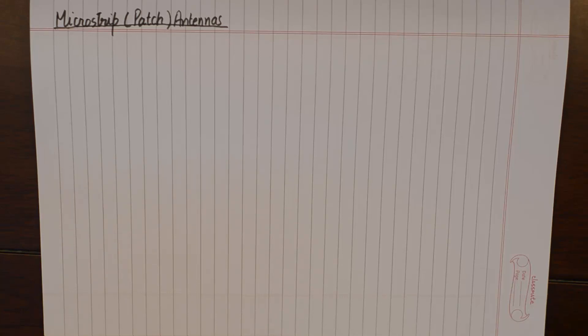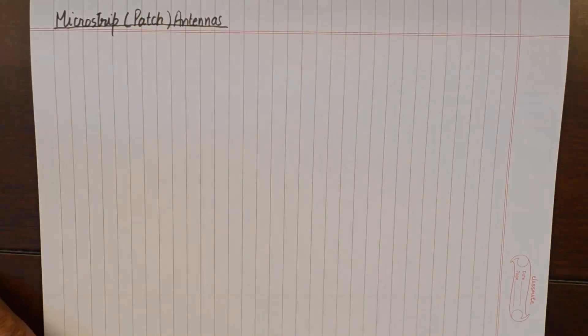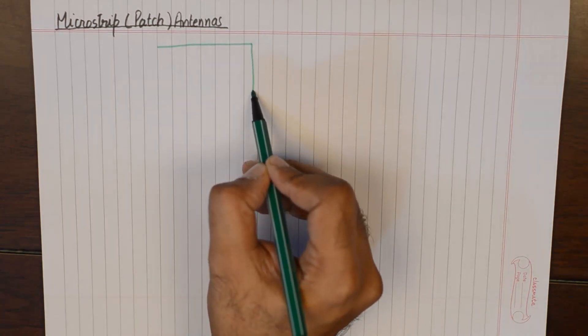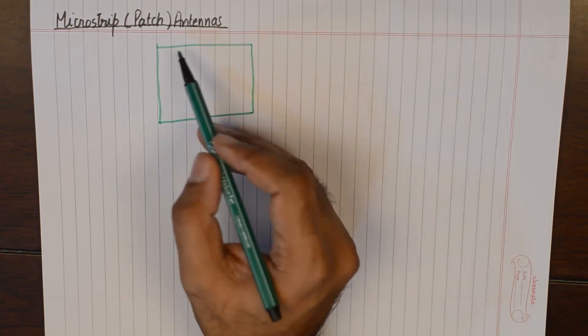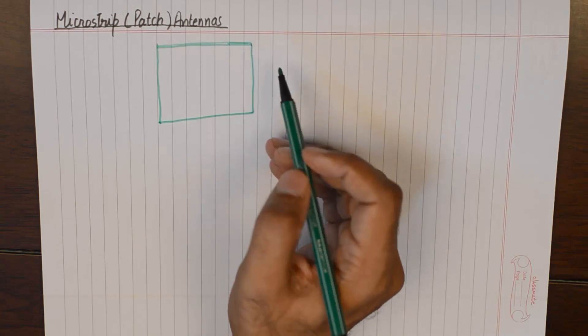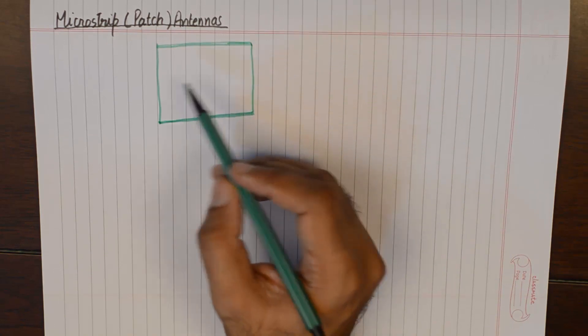Starting off with the construction of patch antennas, you need to think of these antennas as a design on a printed circuit board. Let's say we have a printed circuit board here which is rectangular in shape.